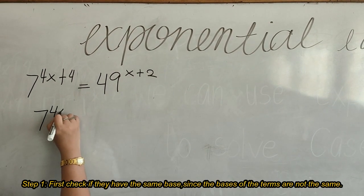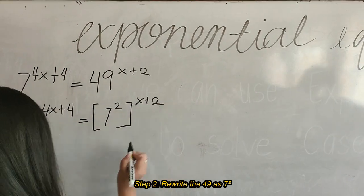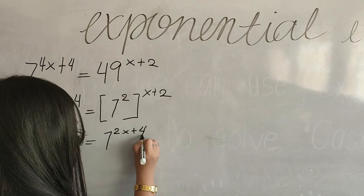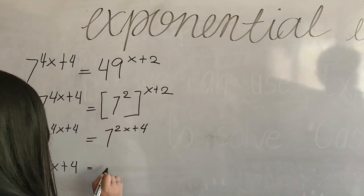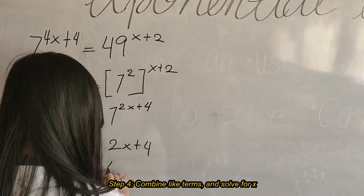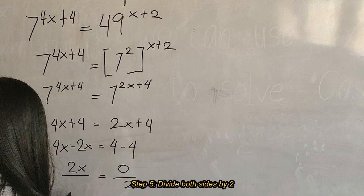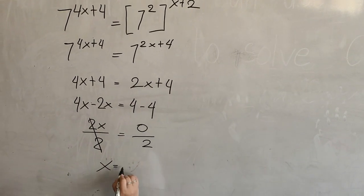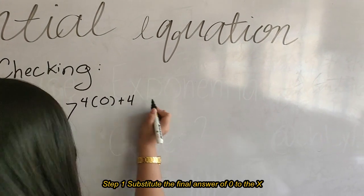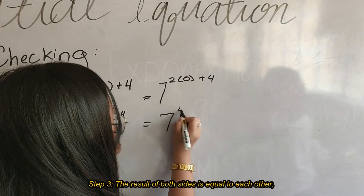For the solution. First step: check if they have the same base — since the bases of the terms are not the same. Second step: rewrite the 49 as 7 squared. Third step: simplify the exponent. Fourth step: combine like terms, solve for x. Last step: divide both sides by 2. For the checking, first step: substitute the final answer of 0 to x. Second step: since both bases are the same, solve the exponent. The result of both sides is equal to each other.